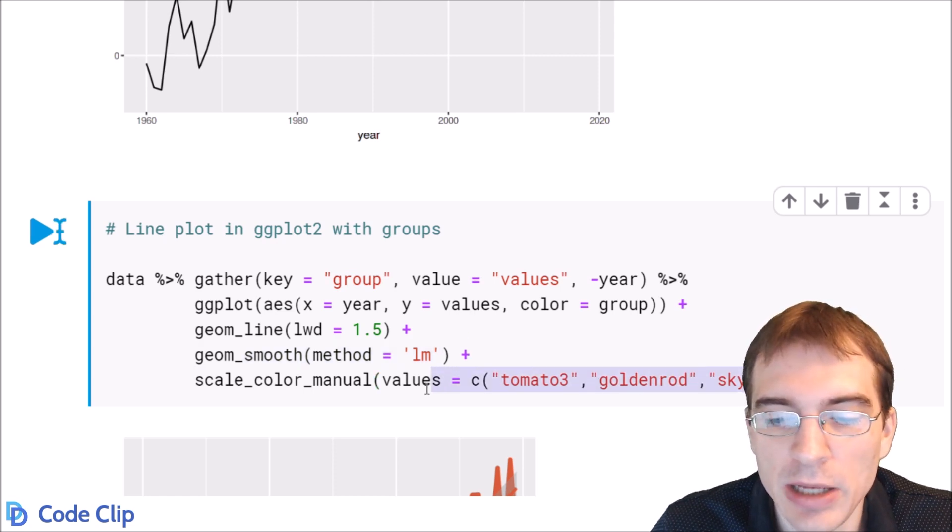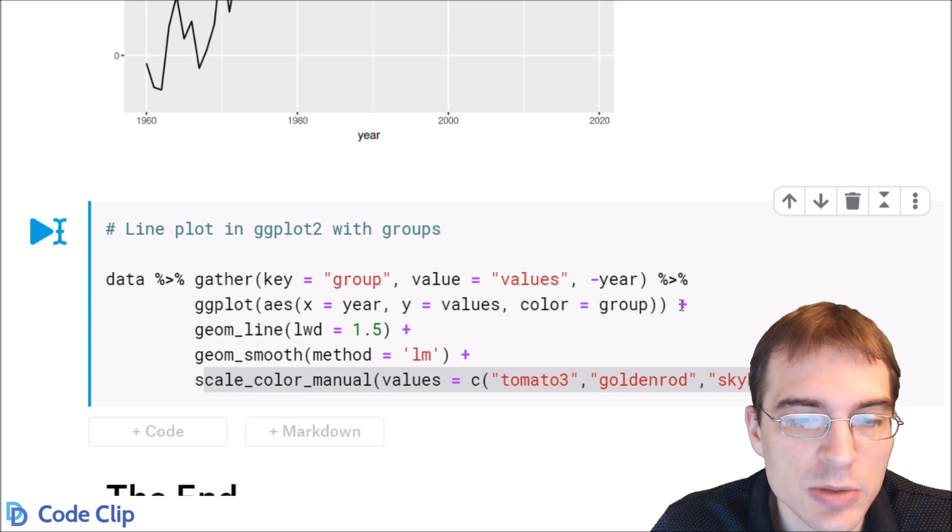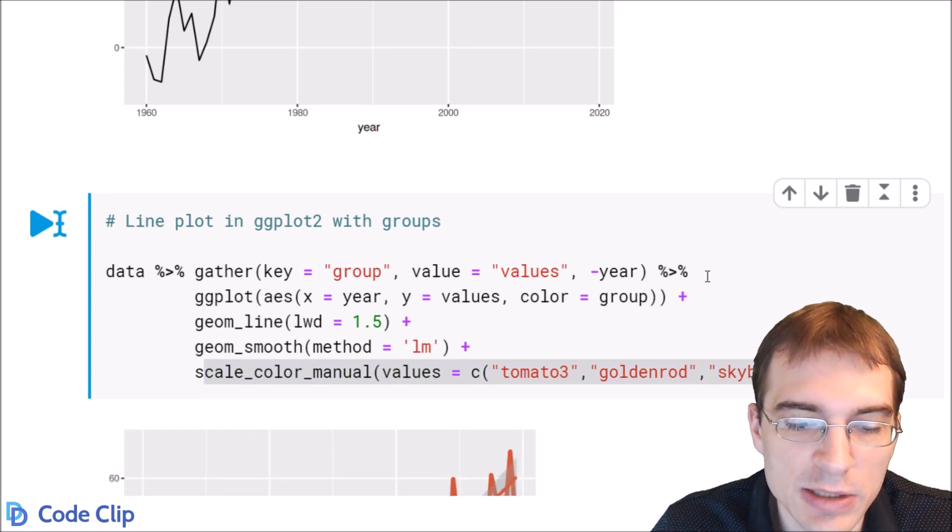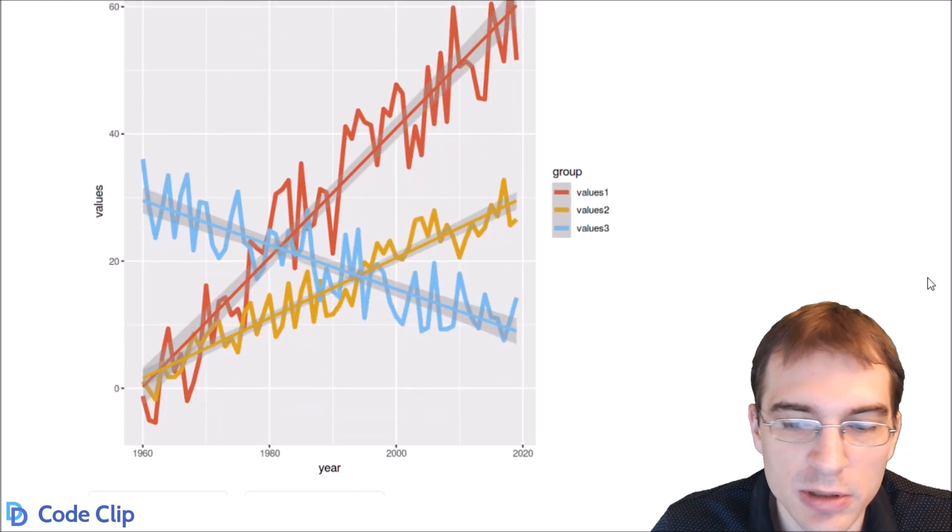I'm going to put in some manual colors here. When we run this we should have a line plot with three different groupings of data all in the same plot and with some custom colors and some trend lines.